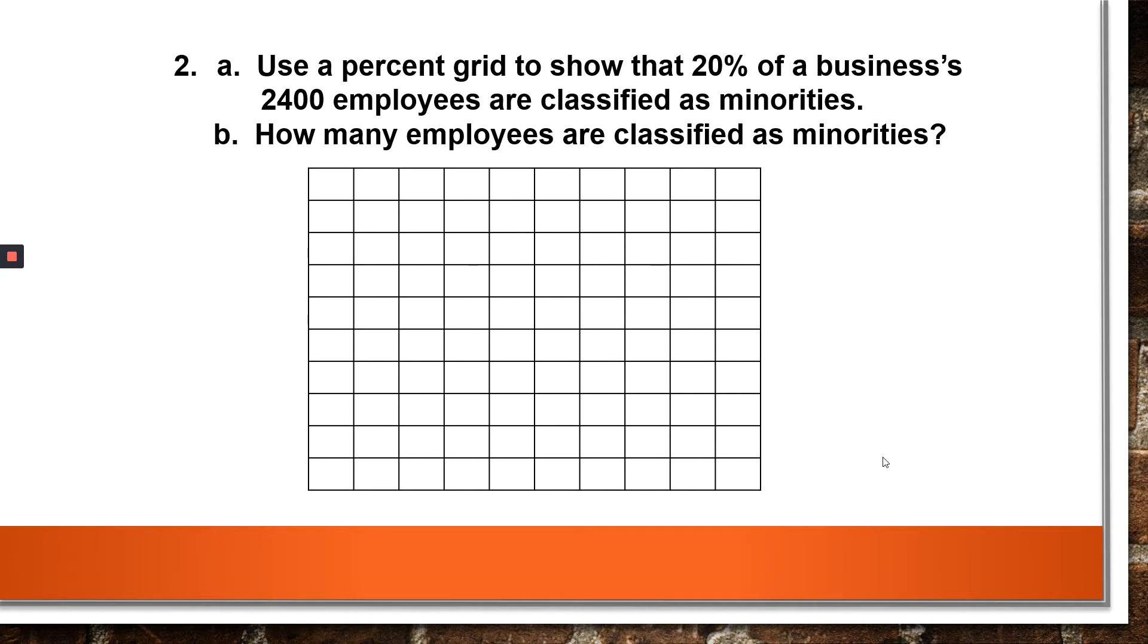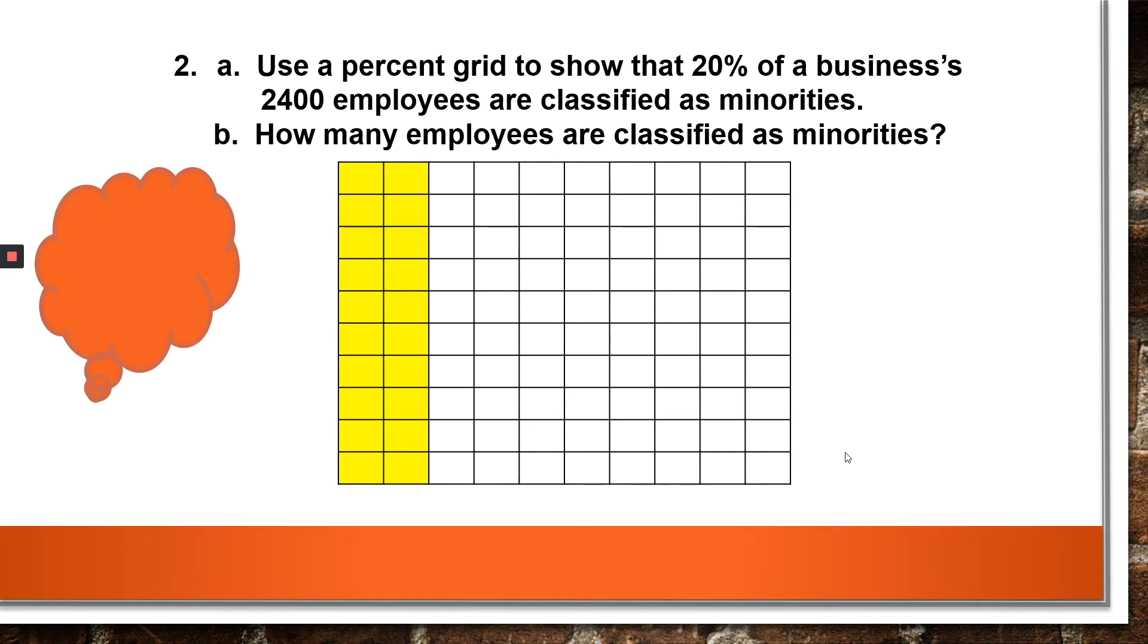Let's do another one. Use a percent grid to show that 20 percent of a business's 2,400 employees are classified as minorities. How many employees are minorities? All right. Well, we know that the whole is 2,400. I want to look at 20 percent. I shaded 20 percent. We said we had 2,400 employees and we want to divide it into the 100 boxes. That will give us 24. So I have 24 in each of those boxes. What's something that I could do to figure this out? Well, 24 times 20 boxes, which gives us 480 minorities. Good job.